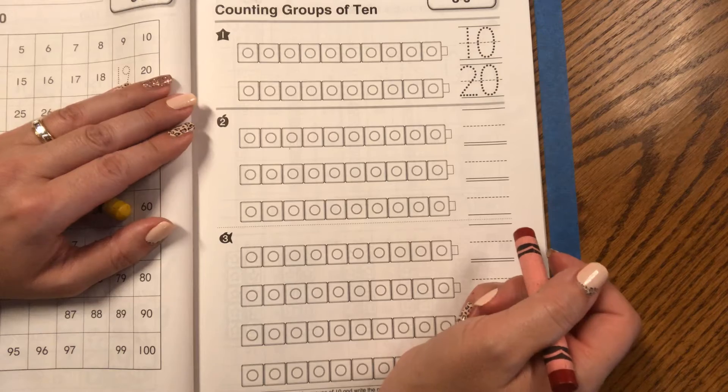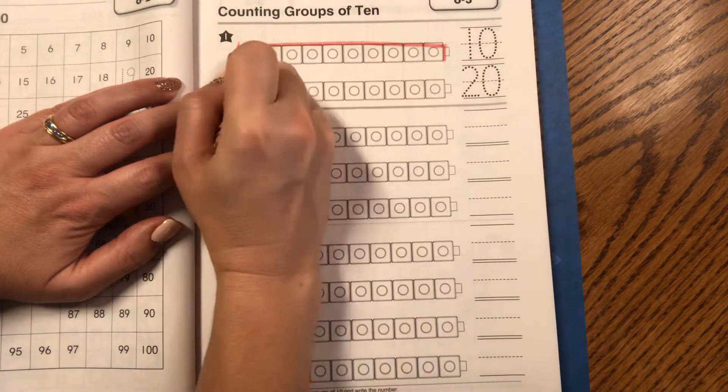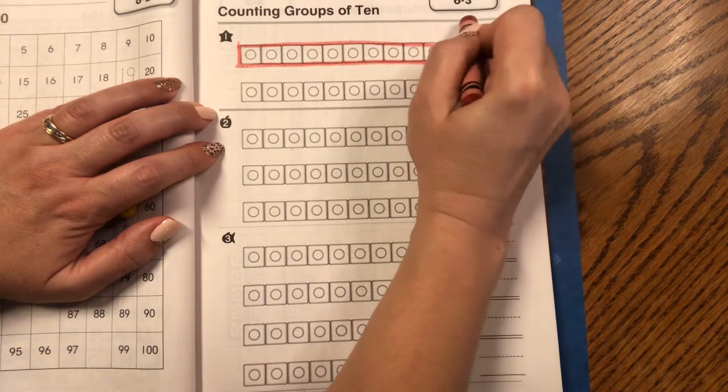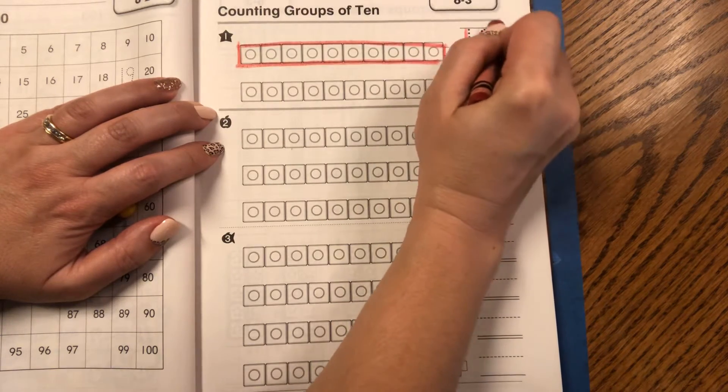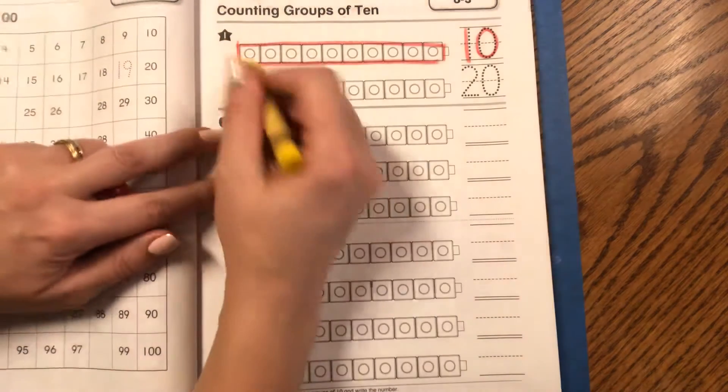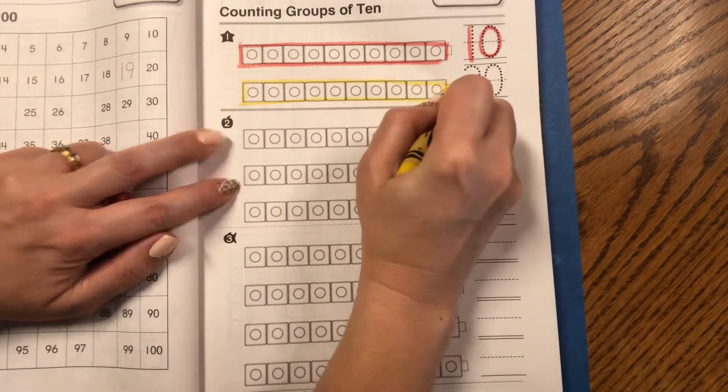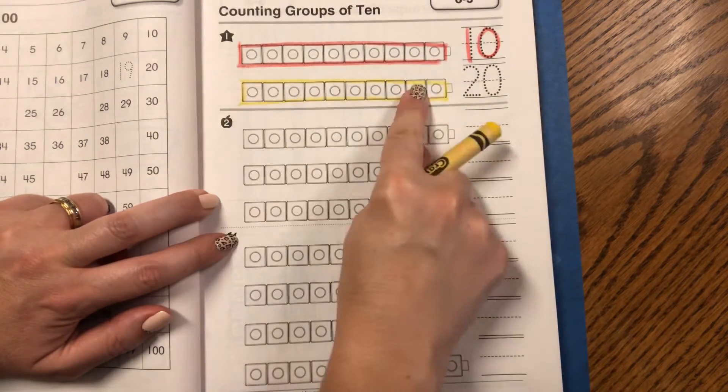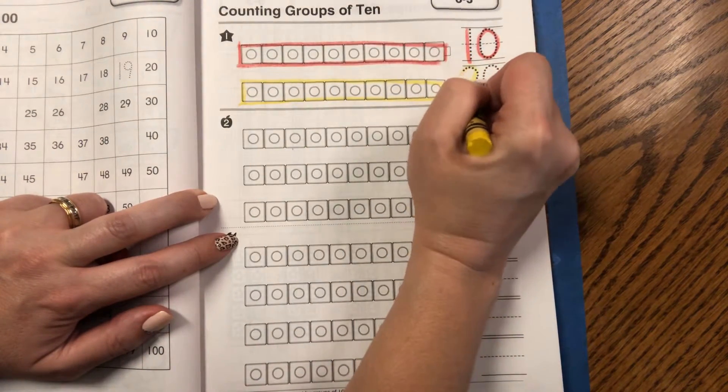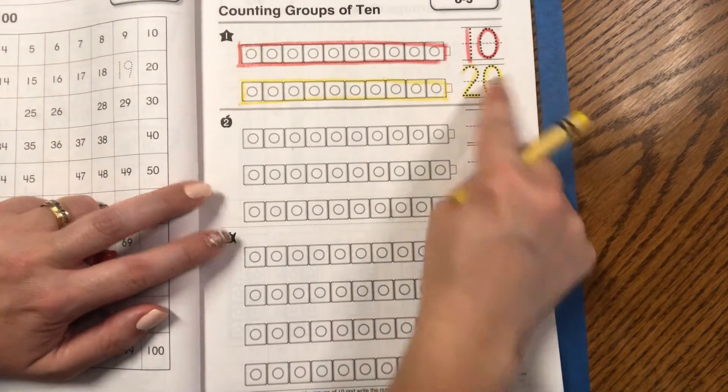So we're going to box up our 10 and label it 1, 10 and 0, 1's. 10. Now let's box up the next row. And now I have two 10s. So that's 2 in the 10s place and 0 in the 1s place. 20. 10, 20.